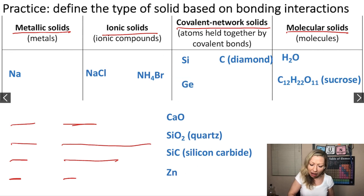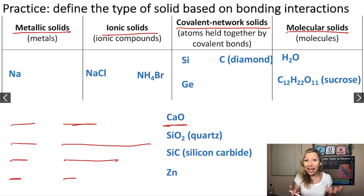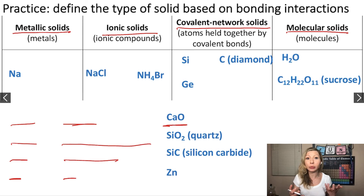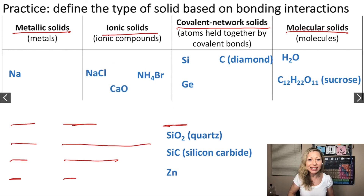What about calcium oxide? Is it a metal? Is it a non-metal? Is it an ionic solid? Indeed, it is going to be an ionic solid because it's composed of Ca2+ and O2- ions — calcium oxide. So it's going to be an ionic solid.